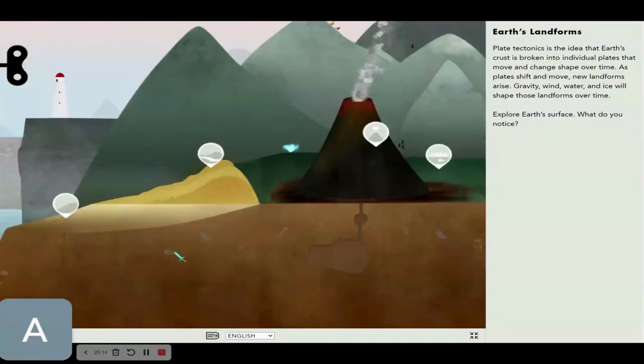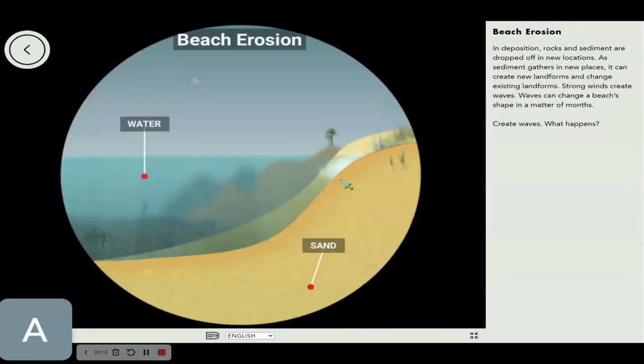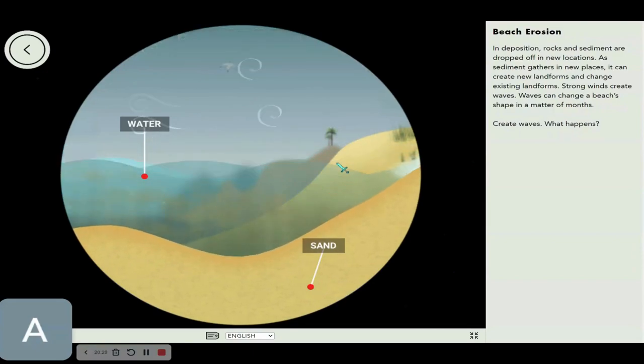But let's go over to the other side. Beach erosion and deposition. Rocks and sediment are dropped off in new locations. As sediment gathers in new places, it can create new landforms and change existing landforms. Strong winds can create waves. Waves can change a beach shape in a matter of months only. That's really fast.